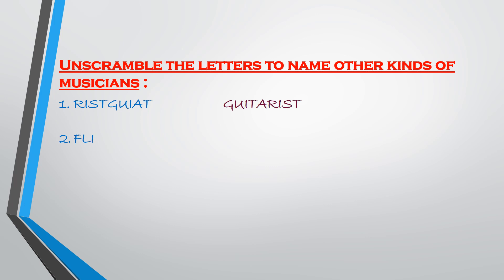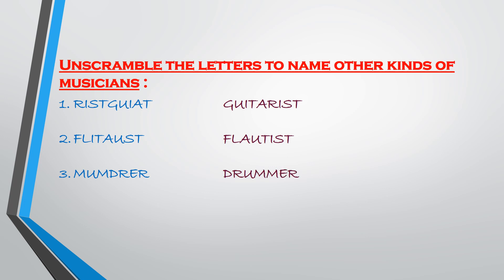Second: F-L-I-T-A-U-S-T. If you rearrange the letters of this word, you will get the name of a musician: F-L-A-U-T-I-S-T, that is flautist. Third: M-U-M-D-R-E-R. If you rearrange the letters properly, you will get D-R-U-M-M-E-R, that is drummer. A drummer is a person who beats the drum.